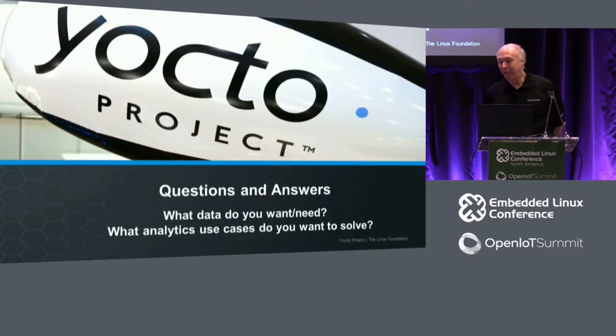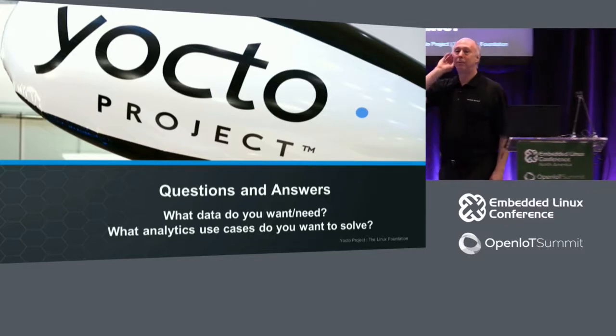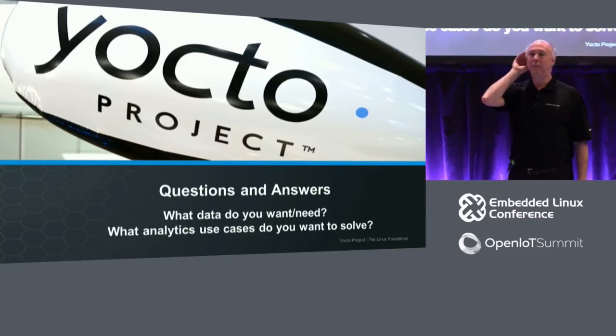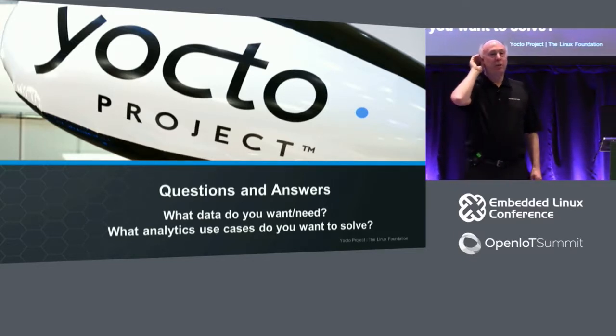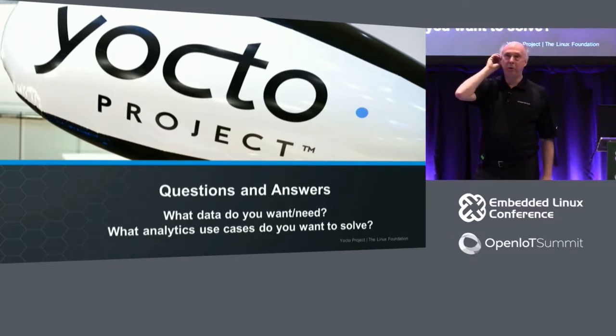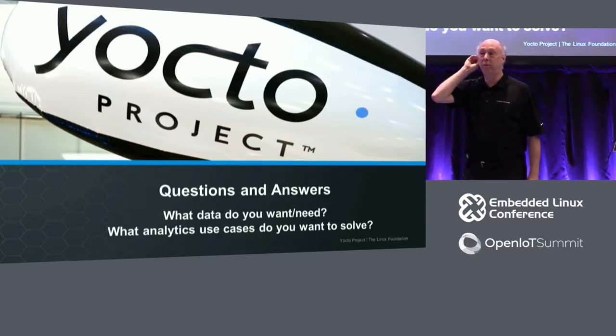We have 15 minutes for questions. What's the earliest version of the Yocto project that supports this? Toaster has been around since version 1.6, so we've had most of the event database since then - about three years. It's gotten a lot more sophisticated since then, but it shows it's been tested and used.